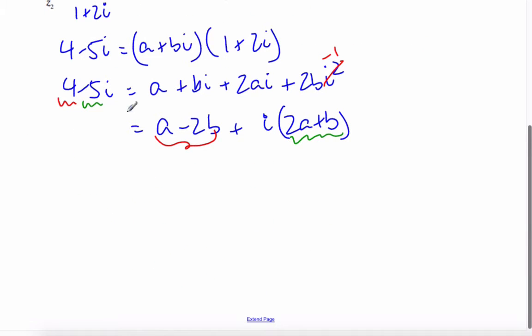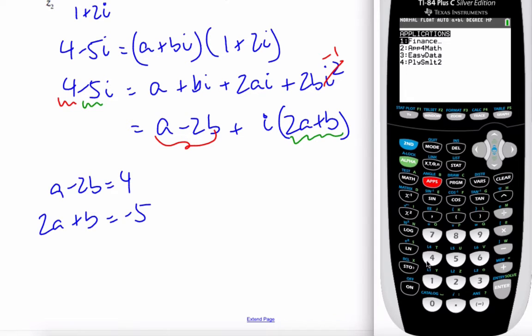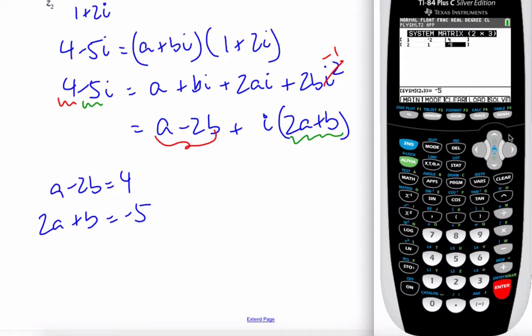And so I get two equations then. a minus 2b is equal to 4, and 2a plus b is equal to negative 5. I can solve that easily enough by going to my calculator, putting simultaneous equation solver, or I could do elimination or substitution, but this way is relatively quick, and my chances of making a mistake are substantially reduced, and I solve that.